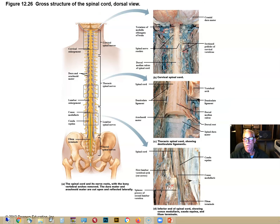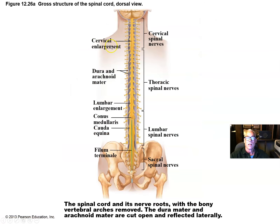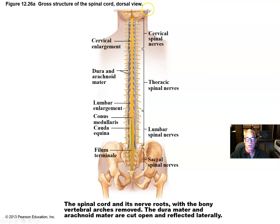Now we move from the brain and brainstem down to the spinal cord. Here's a cartoon drawing showing that there are 31 pairs of spinal nerves that emerge from between each pair of vertebrae. We have 12 cranial nerves connecting the brain and brainstem to the head and neck and body, and now 31 pairs of nerves that enter or emerge from the spinal cord to connect the central nervous system with the rest of the body.